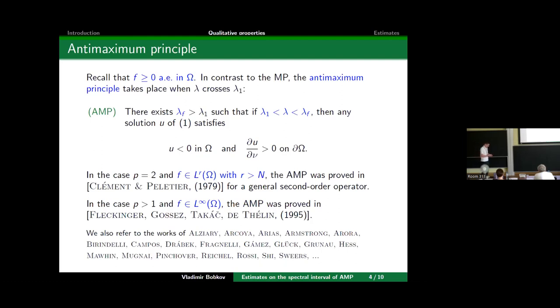It was first observed in a paper by Clément and Peletier in the linear case p equals 2, under the assumption that f belongs to L^r with r greater than the dimension of the space. Moreover, they considered not just this simple model problem but a very general class of problems with different boundary conditions. In the nonlinear case, for general p greater than 1 under the assumption f is bounded, the anti-maximum principle was proved by Fleckinger, Gossez, and Takáč some years later. The approaches in these two works are completely different.